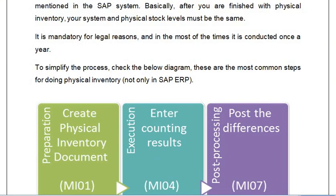So this is all about how to post the material document with respect to physical inventory differences and physical inventory verification. To summarize: the first step is create the physical inventory document, the second step is enter counting results, and the third step is post the differences. This covers the theoretical aspects — we will do this activity in the next video with a practical demonstration.